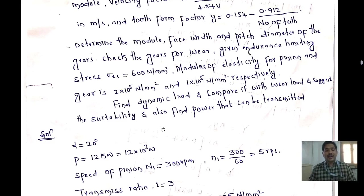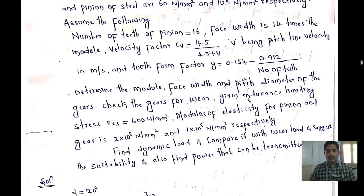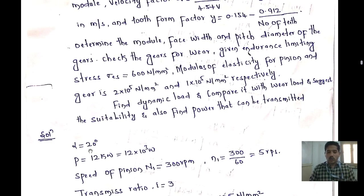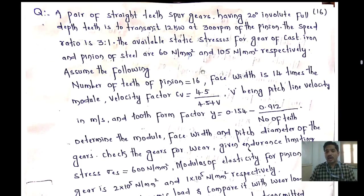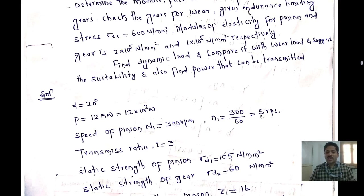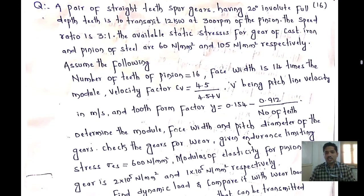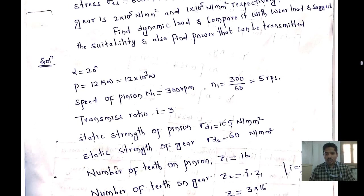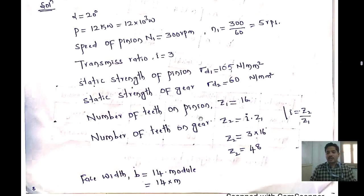Now write down the given data. Full involute depth: alpha = 20 degrees. Power P = 12 kW = 12×10³ W. Speed of pinion N1 = 300 rpm; converting to rps by dividing by 60. Transmission ratio i = 3. Static strength of pinion sigma_d1 = 105 N/mm². Static strength of gear sigma_d2 = 60 N/mm².